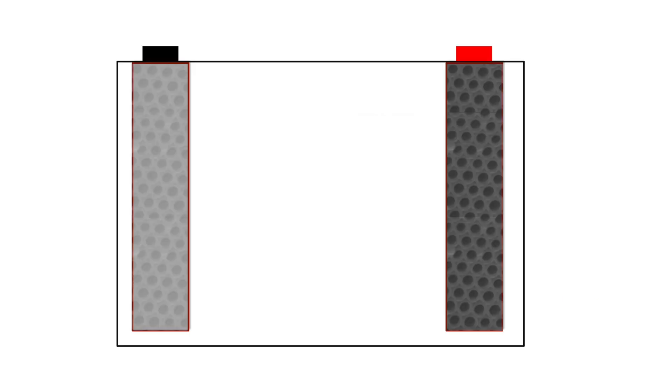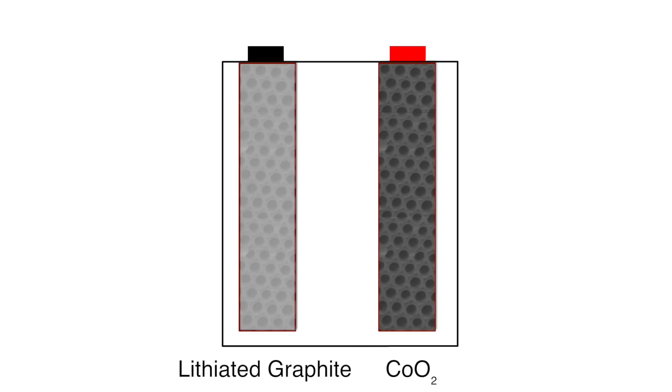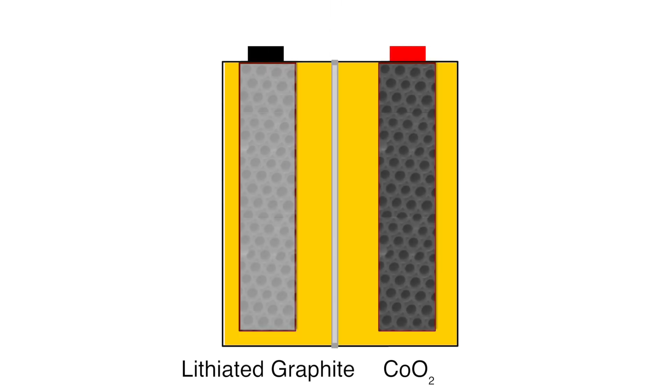Here there are two electrodes, made of cobalt oxide on one side and graphite on the other. Rather than simply being suspended in a solution, they're held apart by a separator or membrane to prevent the electrodes from touching, and everything is soaked in an electrolyte solution.